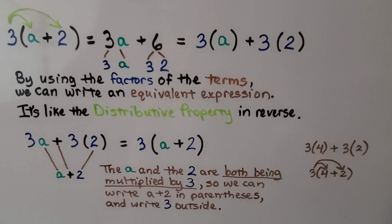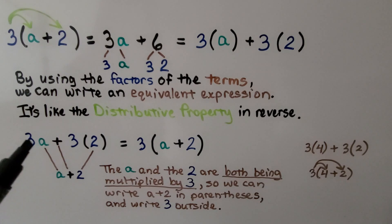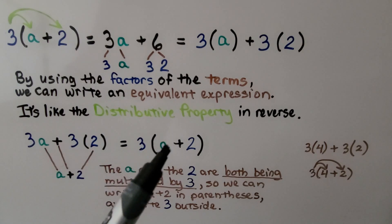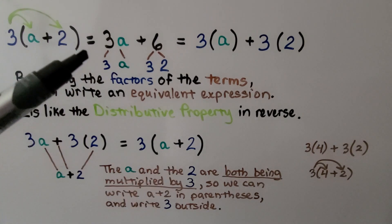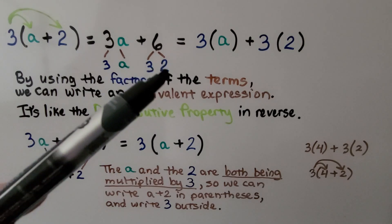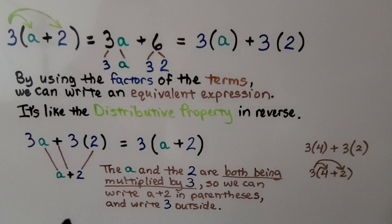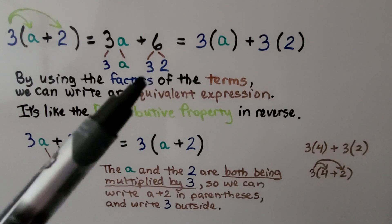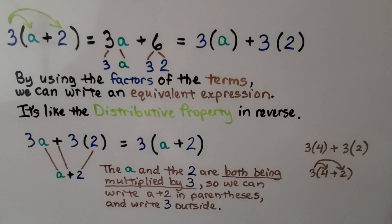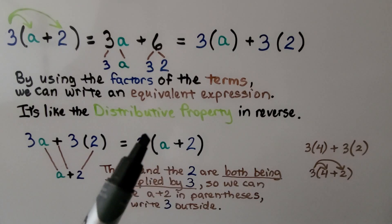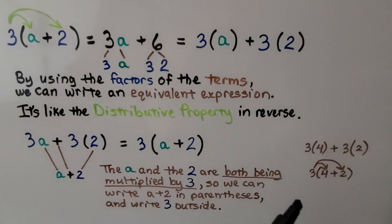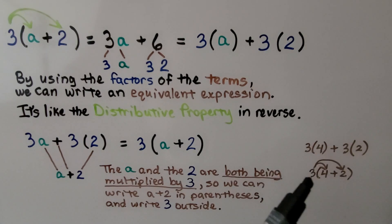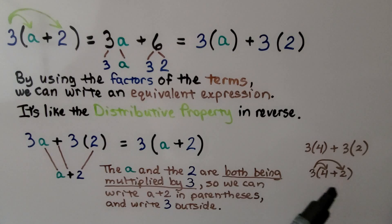By using the factors of the terms, we can write an equivalent expression — it's like the distributive property in reverse. We're going from 3a plus three times two back to three times (a plus two). The factors of 3a are three times a, and the factors of six are three times two. A and two are both being multiplied by three, so we can write (a plus two) in parentheses with the three on the outside. It's like multiplying four and two by three: three times four plus three times two becomes three times (four plus two).